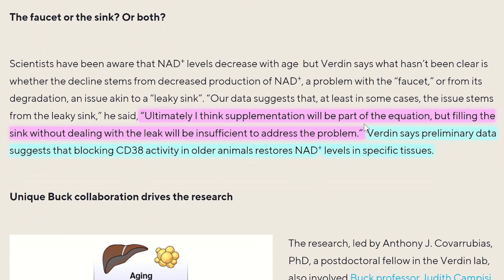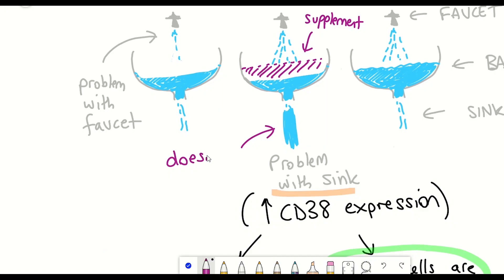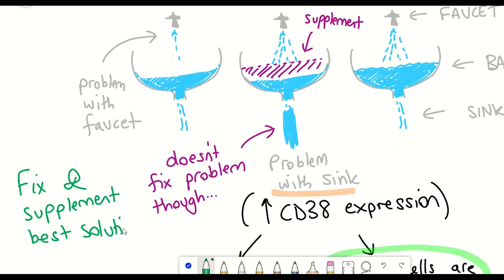Basically, this study doesn't negate the potential benefits of taking NAD plus precursors. It just suggests that what would be even more effective would be ways of preventing this increased level and activity of CD38. That is a key culprit in the decline in NAD plus levels, partially through also degrading NMN.